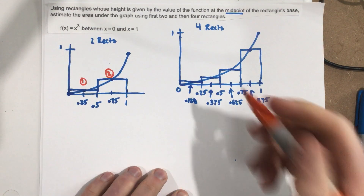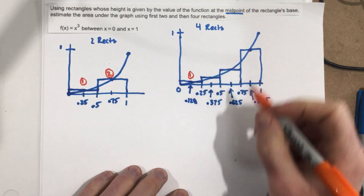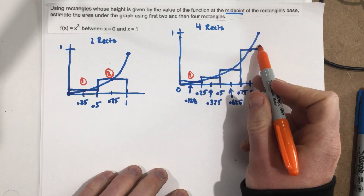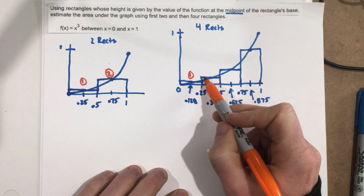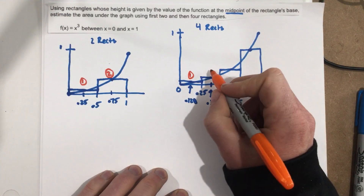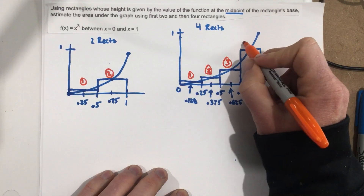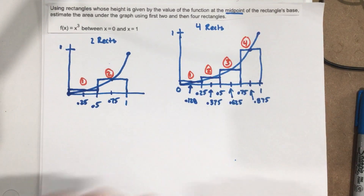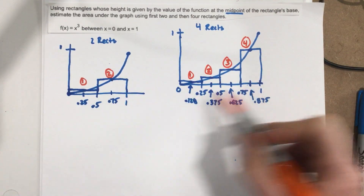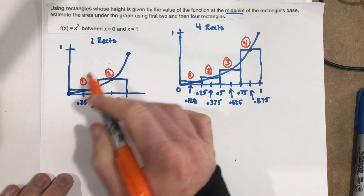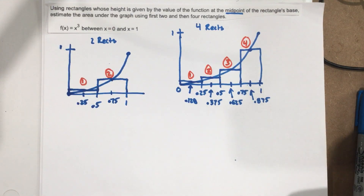The four rectangles using the midpoint of the rectangle's base as the height are going to give us a better estimate because all the areas we're missing in these corners, we're kind of making up for by adding in a little extra area on the other side. Now, once we have all this drawn out, we just need to go through and find the areas for each individual rectangle. Let's focus on the two-rectangle version first.